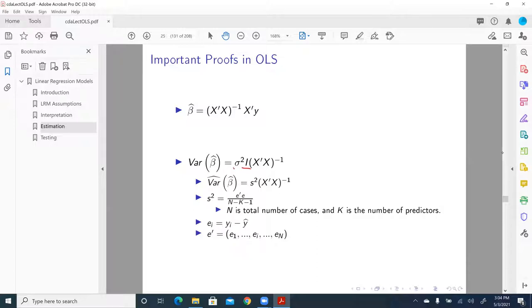And sigma square is the variance of the error term. If you remember when we went over major assumptions of OLS regression, we assume homoscedasticity. That means all the error terms follow the same normal distribution with the same variance.